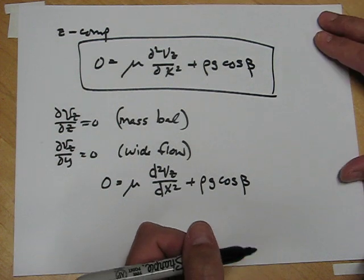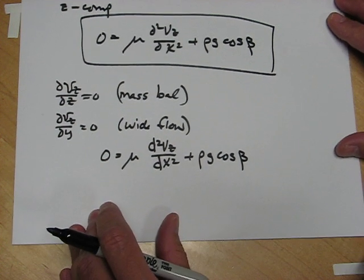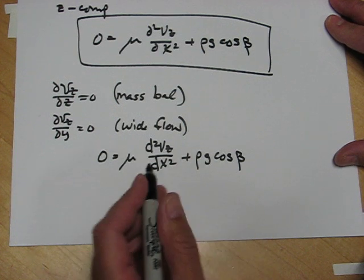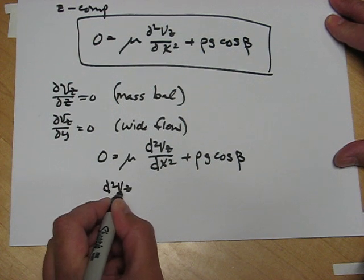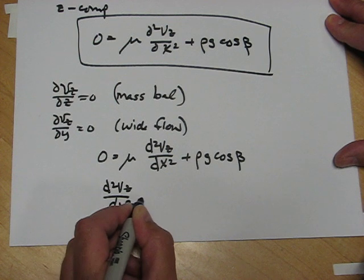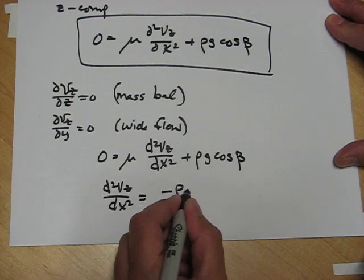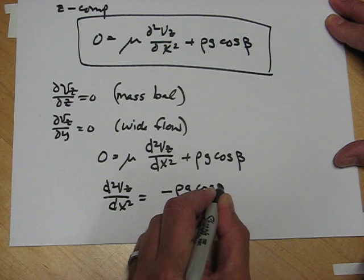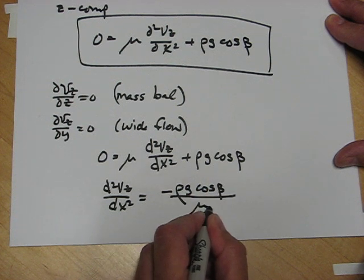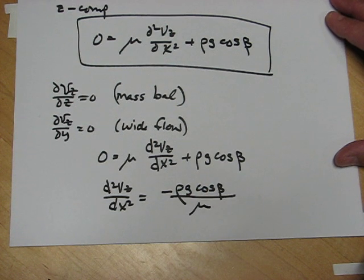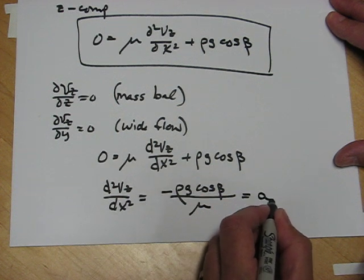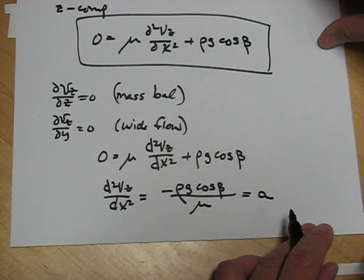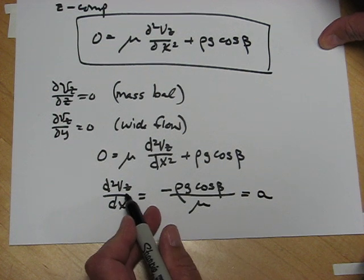Now I'm going to solve this equation. I'll move my density and the gravity term to the other side, and I'll have d squared vz dx squared equals minus rho g cos beta divided by mu. This quantity is all a bunch of constants, so I can just call that a. And I have the second derivative of the function v is equal to a constant a.